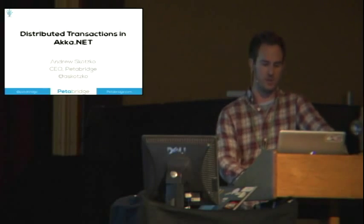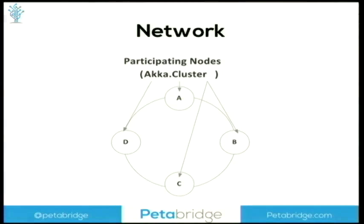So let's get into it. Here we have a network of nodes — let's assume all of these are on different machines, possibly physically separated across data centers, and they're all going to be working together as a cluster. A distributed transaction really works as a two-phase commit. The first phase is the one that really matters: asking around the cluster, can I do this transaction? The second part is the transaction itself, and it's going to be very specific to your use case.